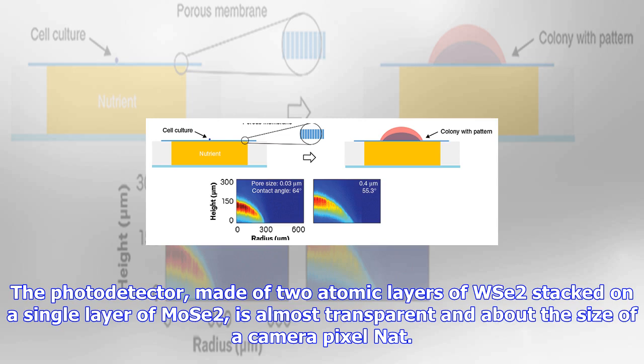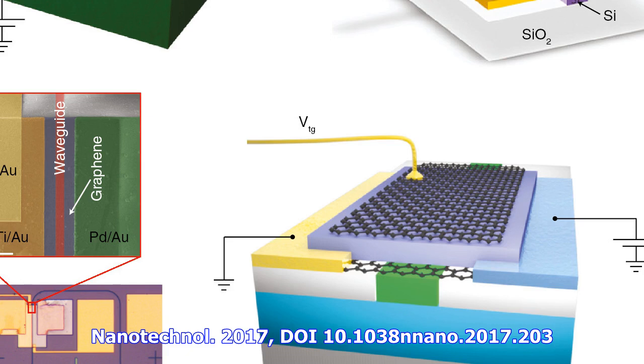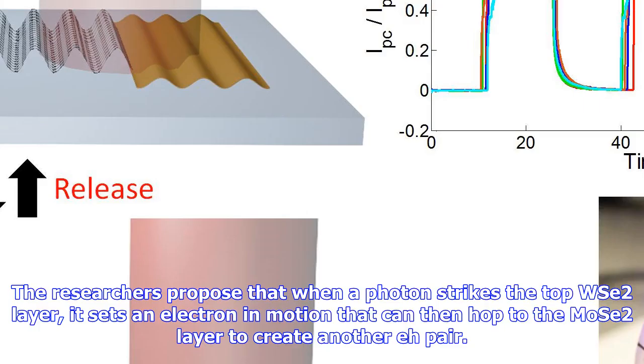The photodetector, made of two atomic layers of WSE2 stacked on a single layer of MoS2, is almost transparent and about the size of a camera pixel. The research appears in Nanotechnology 2017. The researchers proposed that when a photon strikes the top WSE2 layer,